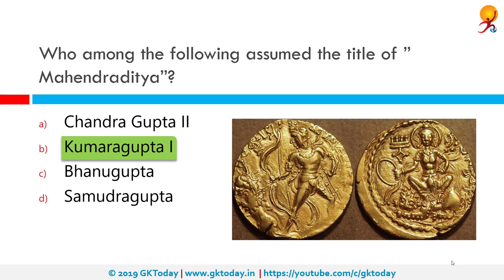He was the son of his predecessor Chandragupta II and Dhruva Devi. He was an able ruler and retained intact the vast empire which extended from Bengal to Kathiawar and from the Himalayas to the Narmada.